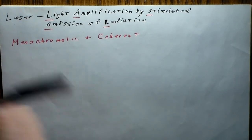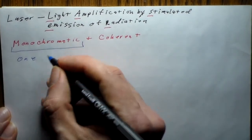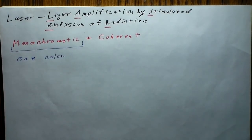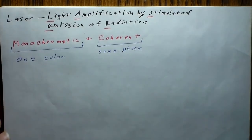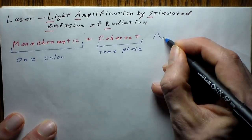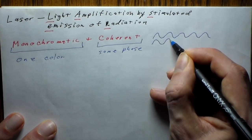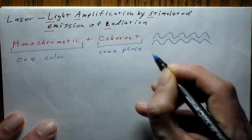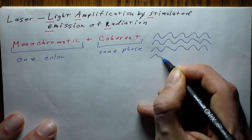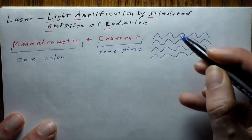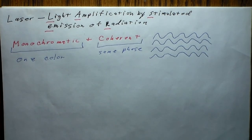Monochromatic means 'mono' — one, 'chromatic' — color. So monochromatic just means one color of light comes off. Coherent means all the waves are in the same phase. If we think of sine waves, all the photons are in lockstep — like a military parade where everyone's legs go up and down at the same time. All the peaks and troughs match up, so everything is nice and coherent.